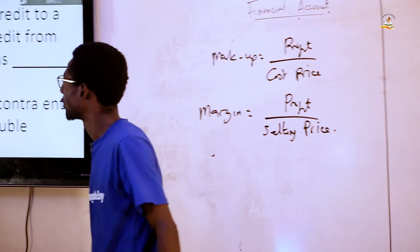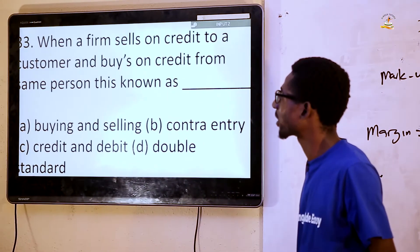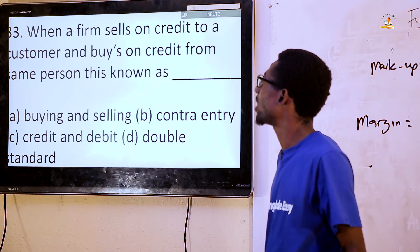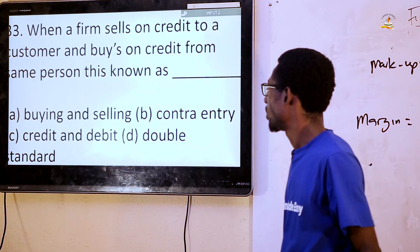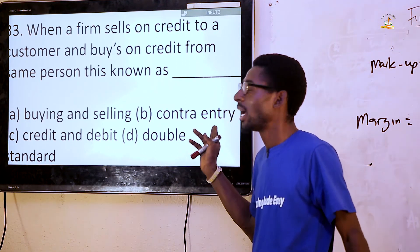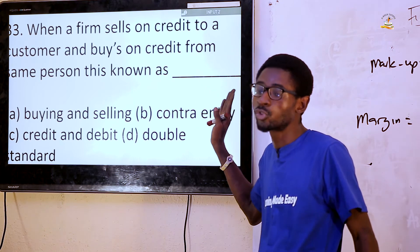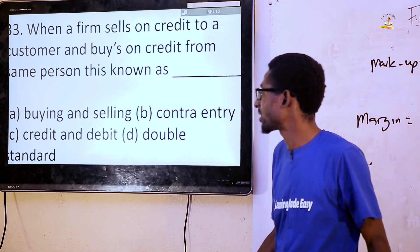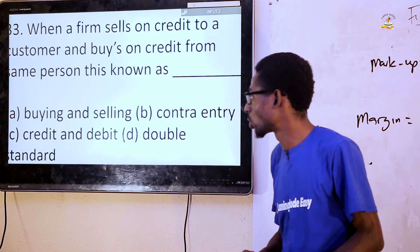Question 33: When a firm sells on credit to a customer and buys on credit from the same customer, this is known as contra entry. This is done in a contra account. So the answer is B, contra entry.